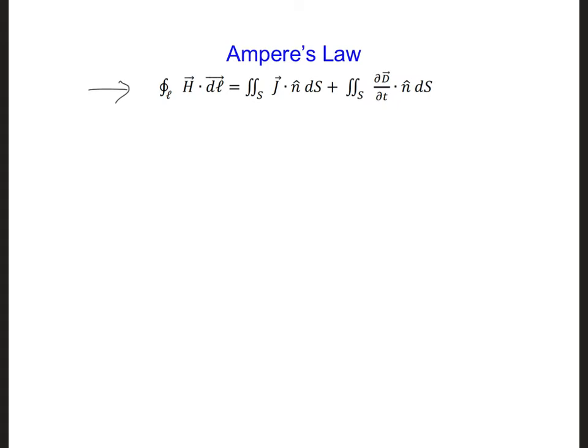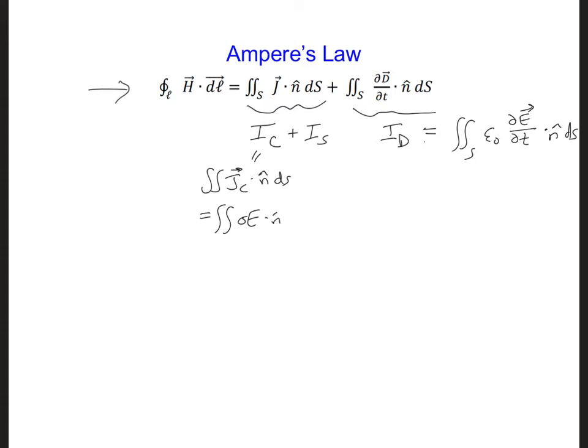The right side of Ampere's law includes all the currents that may exist in space. So this could be a conduction current, and also if we have an antenna there it could be a source current. And here we have displacement current. So the displacement current we can also write as the surface integral of epsilon naught dE dt dot n hat dS. And the conduction current is J_c dot n hat dS, which we can also write as sigma E dot n hat dS. And so this might be like if we had a dipole antenna current flowing along an antenna. So that's an example source current.